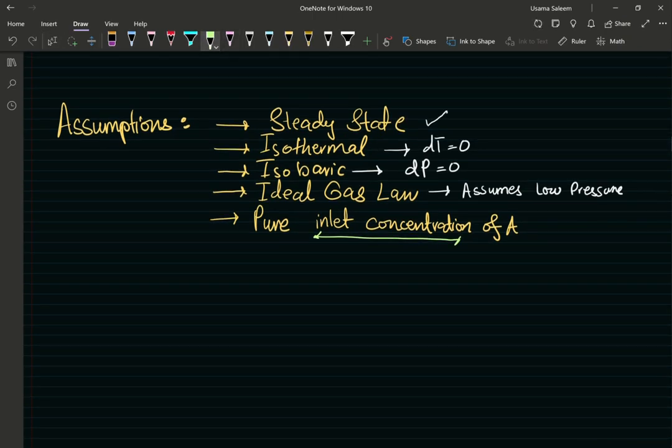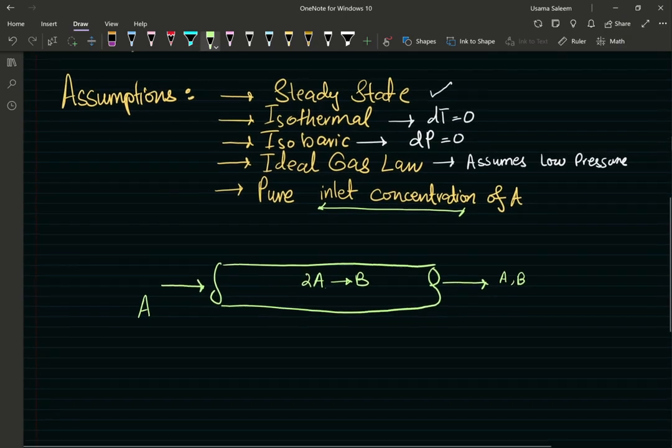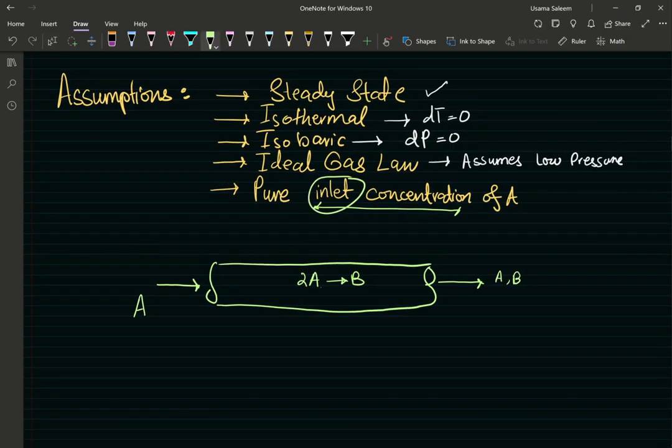So just for the aesthetic, I'm just going to draw a tubular reactor. So in goes my pure A. And outcomes 2A goes to B. And outcomes some A and some B. No inerts. We're assuming pure inlet. Good.